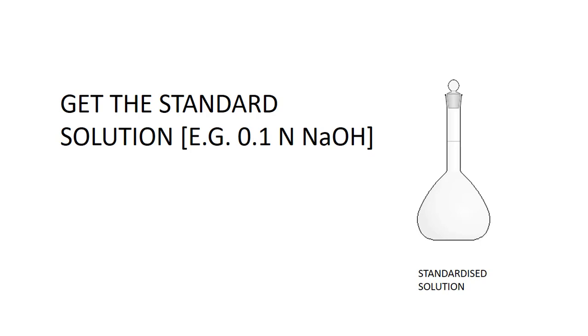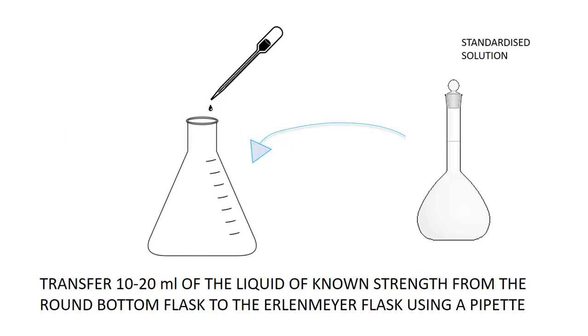After that, take the standard solution and transfer around 10 to 20 ml or any known volume that you can measure using a pipette. Transfer it from the round bottom flask to the Erlenmeyer flask using a pipette.